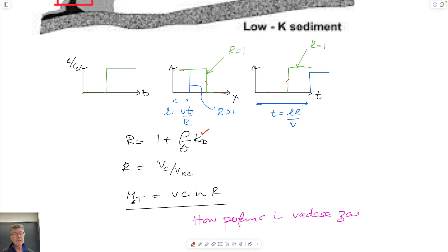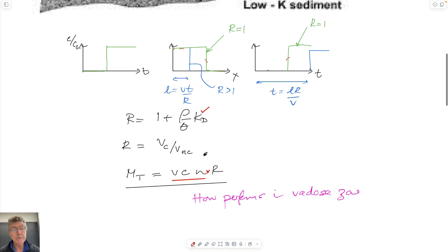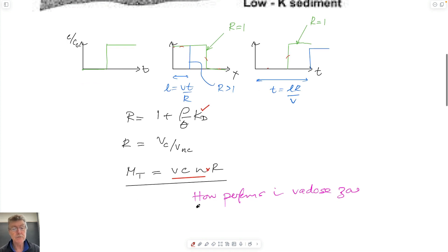If you want to calculate the mass in place, we typically have to include not only the mass within the fluid, but also the mass sorbed onto the solid. We can get that easily by straightforwardly multiplying through by the retardation coefficient.